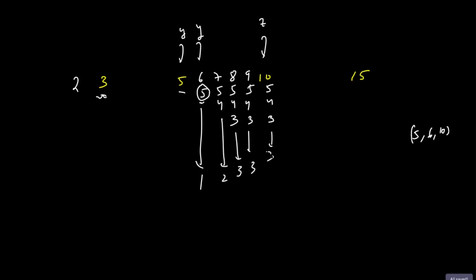The specific triplets are: 5,7,10 and 4,7,10; then 3,8,10 and 4,8,10 and 5,8,10; and similarly for Y=9 and Y=10. This confirms the counts as 1, 2, 3, 3, 3 — a pattern of consecutive increasing numbers up to a maximum determined by the range, then repeating at that maximum.